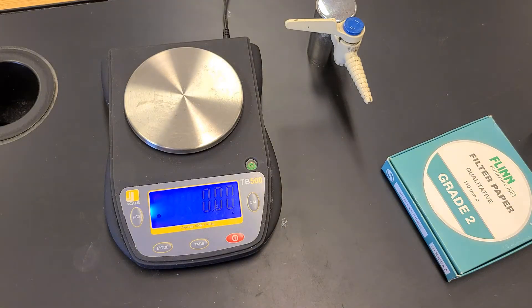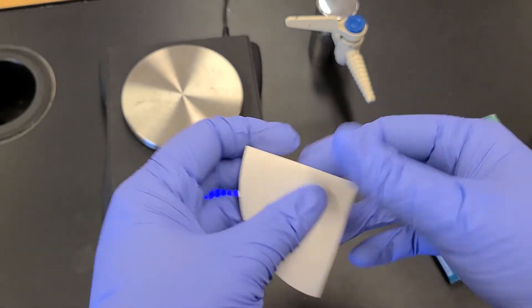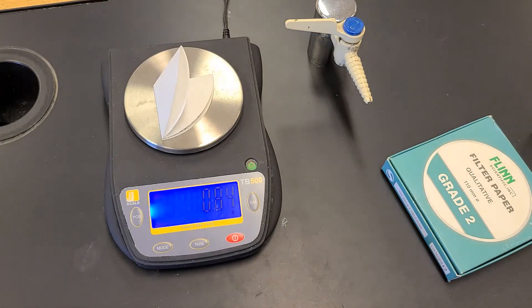Now I'm going to use a pencil to put my name on this. We want to do that before weighing because the mass of the pencil will increase the mass of the filter paper, and you don't want to use ink or something that's going to get washed away by water. I'm going to go ahead and mass my filter paper here.